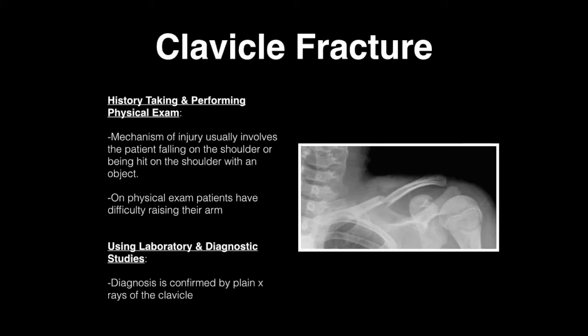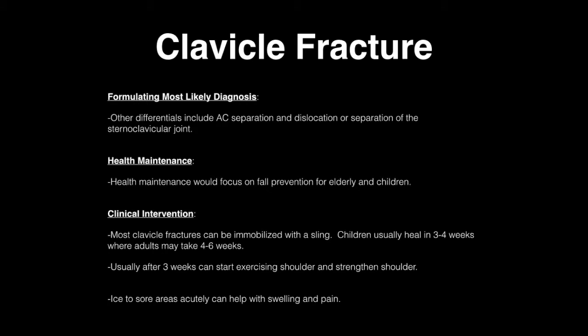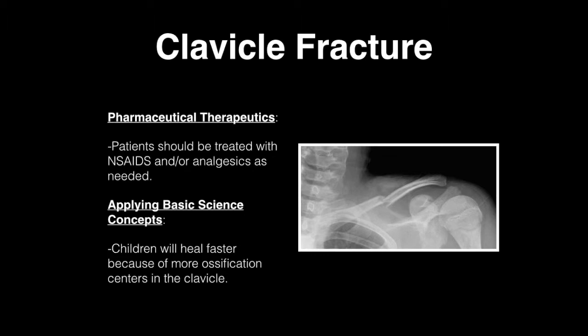Clavicle fractures typically involve a patient falling onto the shoulder or being struck in the shoulder with an object. On physical exam, patients have tenderness in the clavicular area. Diagnosis is confirmed by plain x-rays. Differentials include AC separation and sternoclavicular joint dislocation. Health maintenance focuses on fall prevention for the elderly and young children. Most clavicle fractures can be immobilized with a sling. Children usually heal within 3-4 weeks, while adults may take 4-6 weeks. After 3 weeks, shoulder exercises can begin, with ice applied acutely for swelling and pain. Patients should be treated with NSAIDs and analgesics as needed. Children heal faster due to the ossification centers of the clavicle.